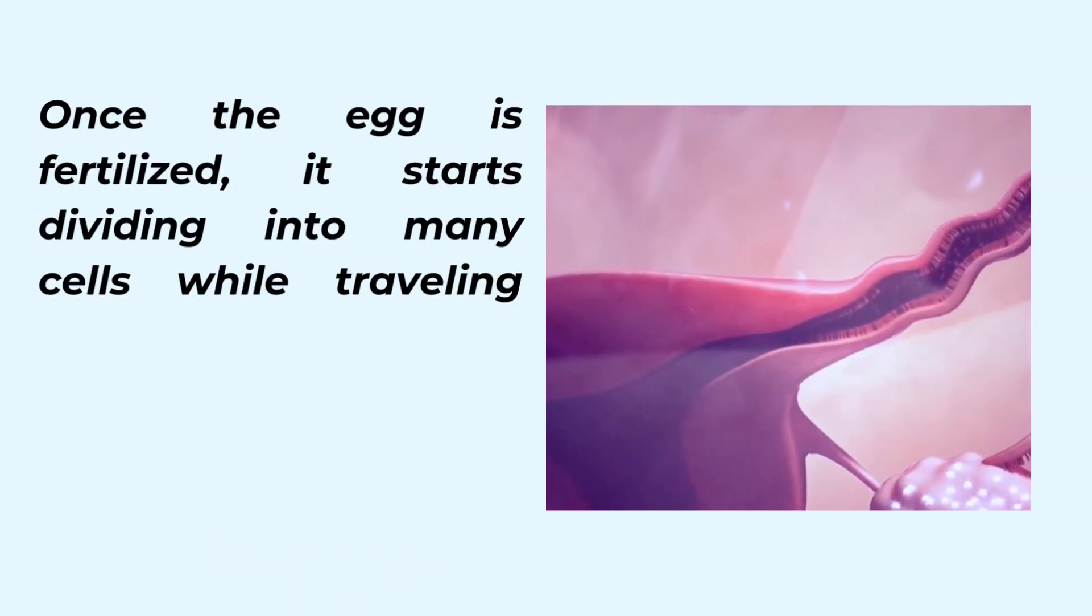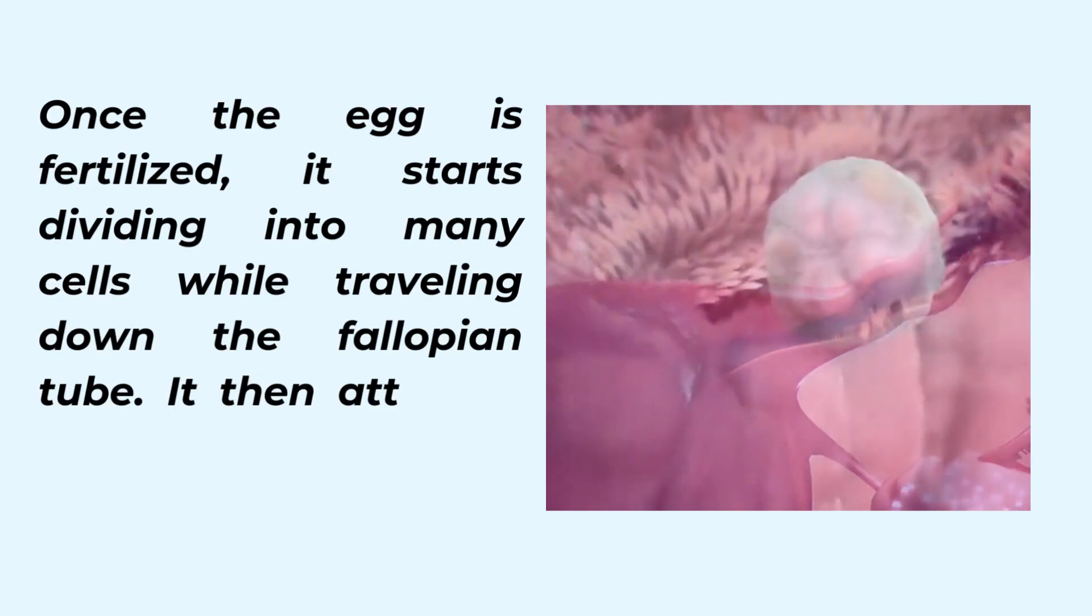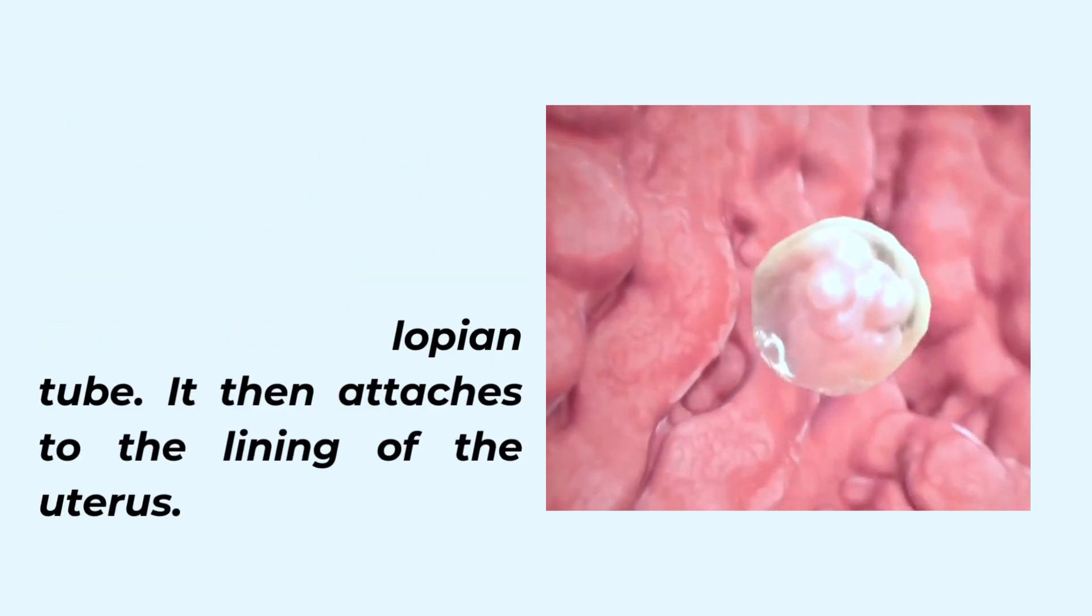Once the egg is fertilized, it starts dividing into many cells while traveling down the fallopian tube. It then attaches to the lining of the uterus.